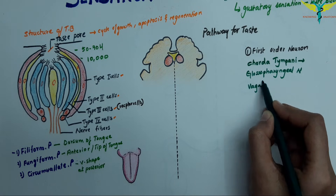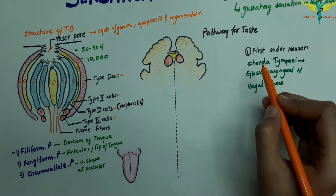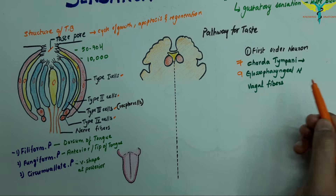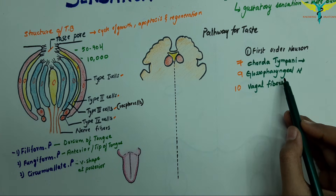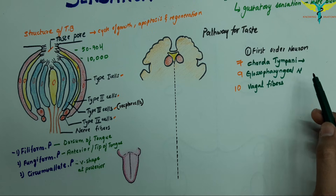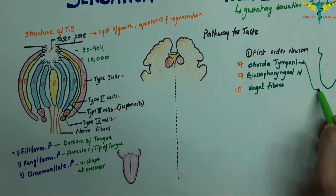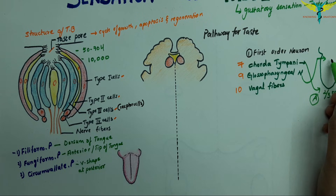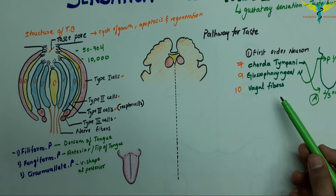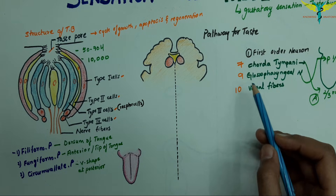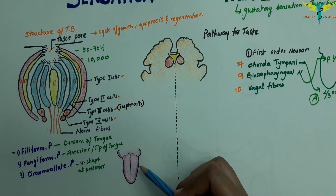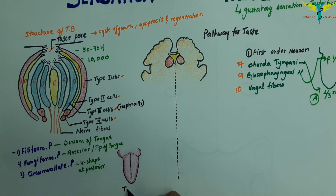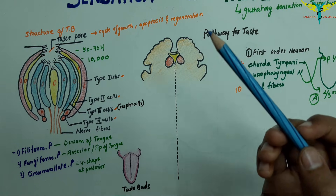The second nerve is the glossopharyngeal nerve, and the third is the vagal nerve. The chorda tympani fibers are from the facial nerve (7th cranial nerve), carrying taste from the anterior two-thirds of the tongue. The glossopharyngeal nerve (9th cranial nerve) carries taste from the posterior one-third of the tongue. The vagal nerve (10th cranial nerve) carries fibers from taste buds in other regions. Axons from these first-order neurons run together in the medulla oblongata and terminate in the nucleus of the tractus solitarius.